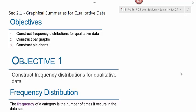All right, section 2.1 is a graphical summary for qualitative data. In the last chapter, we learned what the difference between qualitative and quantitative data is.